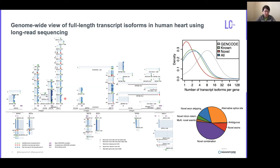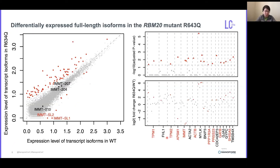We classified novel splicing events into different types, such as exon skipping and intron retention. The most abundant category is the novel combination, where all exons have previously been identified but their combination hasn't been observed yet. Using the quantification table, we then performed differential isoform analysis between the mutant and the control, and identified 38 mispliced transcript isoforms in 34 genes enriching for cardiac function.